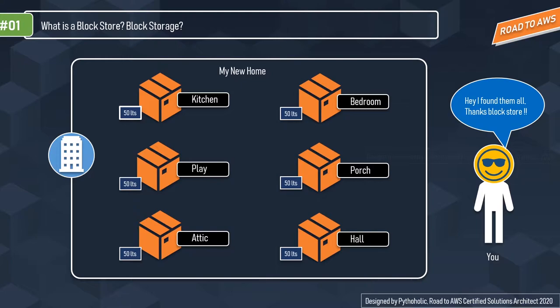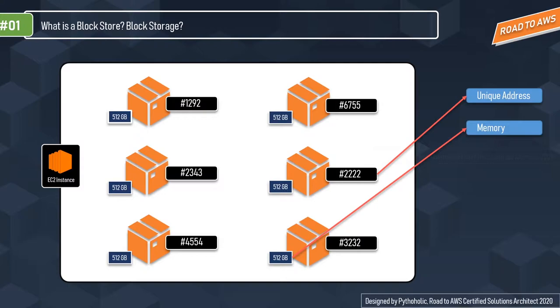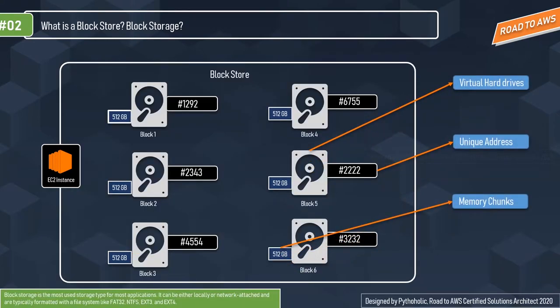Each block of data has its own address, with no additional information or metadata to provide more context. With block storage you get an address as the only metadata for access. As you can see in the visual, data is divided into different blocks of capacity, each with a unique address. In retrospect, block storage stores data in volumes or blocks — each block acts as an individual hard disk drive with its own file system.